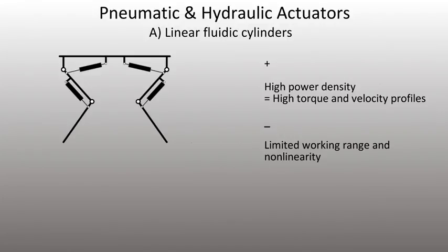In robotic leg locomotion, fluidic actuators are well known to perform at very high power densities. Fluidic actuators are often implemented through linear piston type actuators with high torque and velocity output.